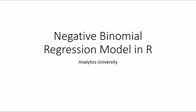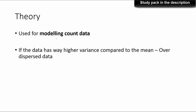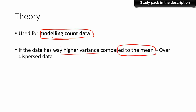We will see what is negative binomial regression and how we build a negative binomial regression model in R. This is the type of regression model used to model count data only when the variance of the data is high compared to the mean. This condition differentiates Poisson regression from negative binomial regression, and we call that type of data over-dispersed data. Over-dispersion is the main difference between the two.